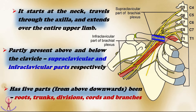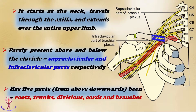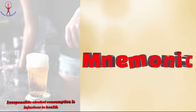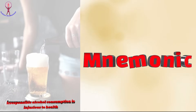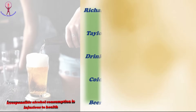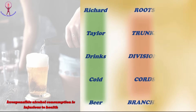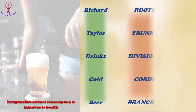The brachial plexus has 5 parts, from above downwards: roots, trunks, divisions, cords, and branches. Here is a mnemonic to remember the parts of brachial plexus: 'Richard Taylor Drinks Cold Beer.' Each first letter represents the parts — Roots, Trunks, Divisions, Cords, and Branches.